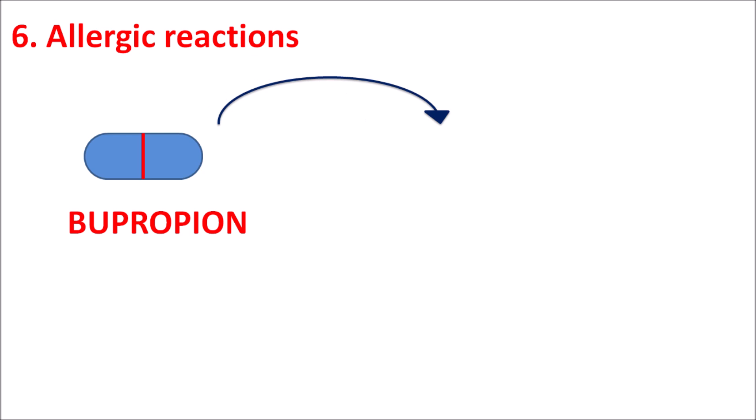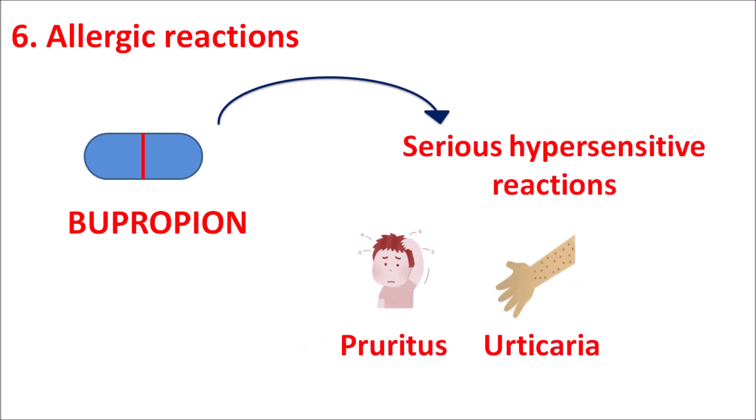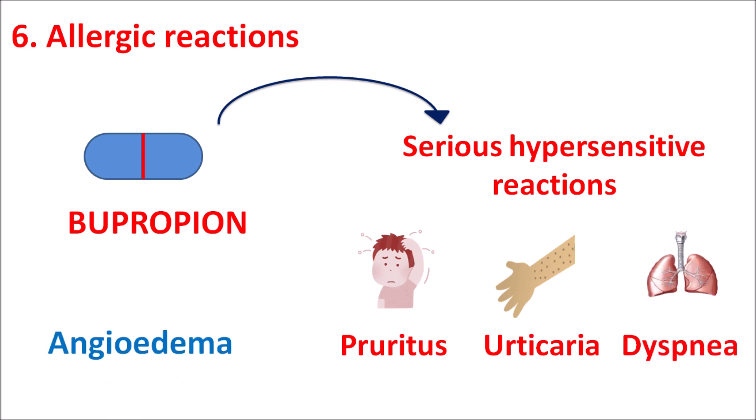The sixth concern is allergic reactions. Just like other agents, bupropion can produce allergic and hypersensitive reactions, including pruritus, urticaria, dyspnea (difficulty in breathing), and angioedema resulting in swelling of the lips, tongue, and pharynx. Sometimes it can also produce serious hypersensitive reactions — in such conditions bupropion is contraindicated.